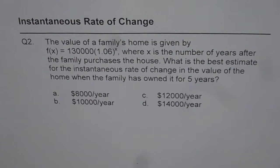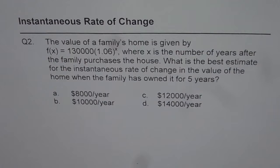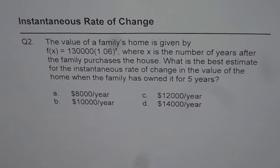I am Anil Kumar and here is question number 2 on instantaneous rate of change. The value of a family's home is given by f(x) = 130,000 × 1.06^x, where x is the number of years after the family purchases the house. What is the best estimate for the instantaneous rate of change in the value of the home when the family has owned it for 5 years?